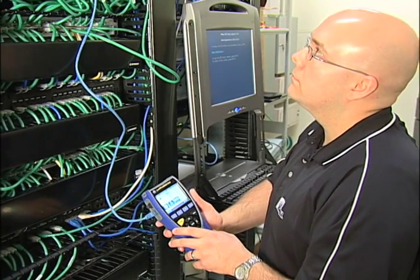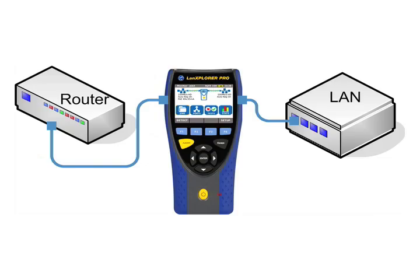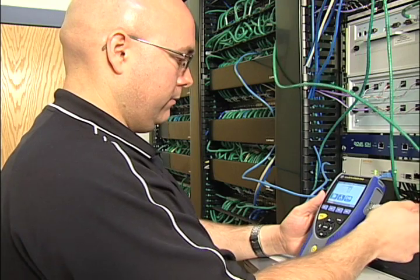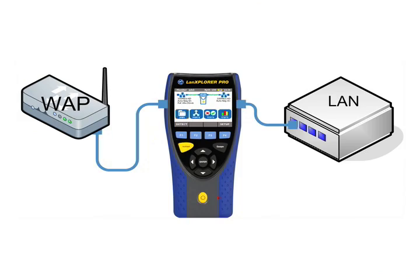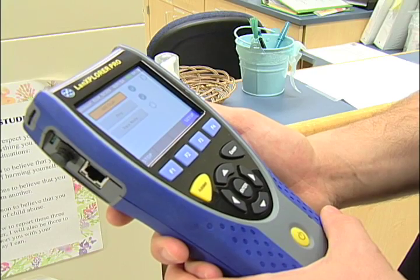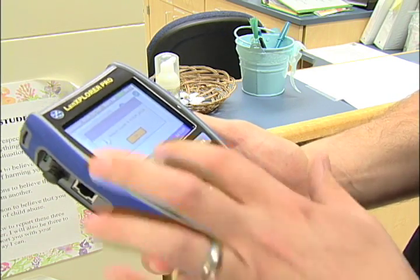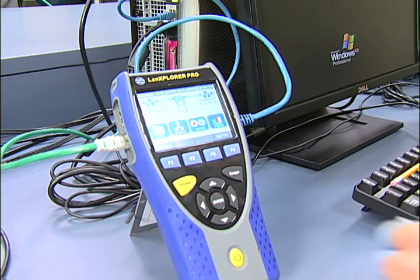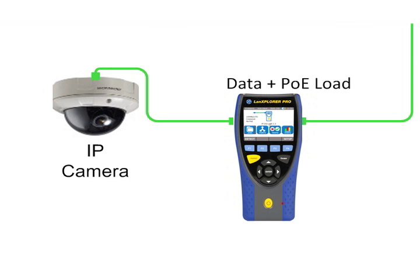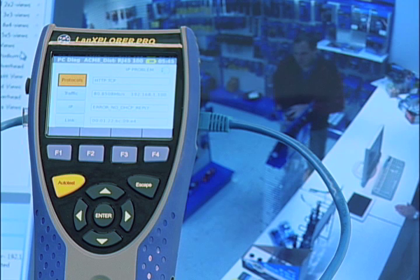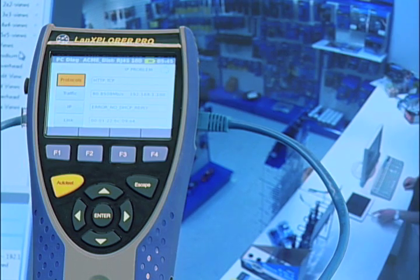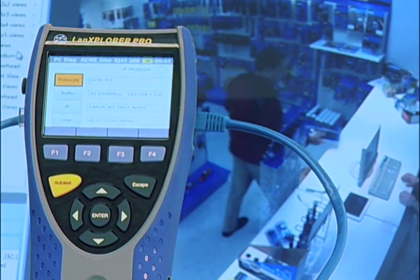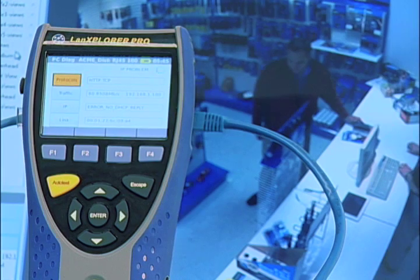The traffic seen by LAN Explorer depends on where it is placed in the network. Putting it in line between the internet router and the LAN will allow it to see all internet traffic coming in and out of the network. Placing it between a wireless access point and the network will let it see all the wireless activity on that AP. Placing it between a PC and the network will allow it to diagnose issues that may be preventing that computer from connecting to the network. When connected between an IP CCTV camera and the network, it will show the real-time bandwidth generated by the camera so you can see how changing settings such as resolution, frame rate, and video compression impact network performance.